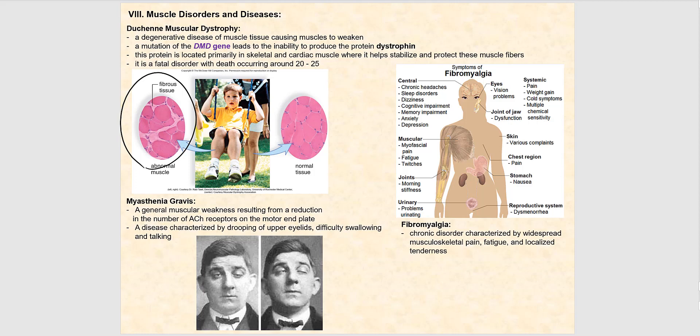Fibromyalgia is more common in females. It is idiopathic — meaning the cause is unknown — though overactive nerves are suspected. It is a chronic disorder characterized by widespread musculoskeletal pain, including muscle aches, muscle fatigue, aching joints, overall fatigue, and localized tenderness.